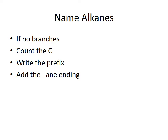Now we're going to name the alkanes. The first thing we're going to name are those that have no branches — they're very easy to name. You just count the carbons, write the prefix for that number of carbons, and then add the 'ane' ending.